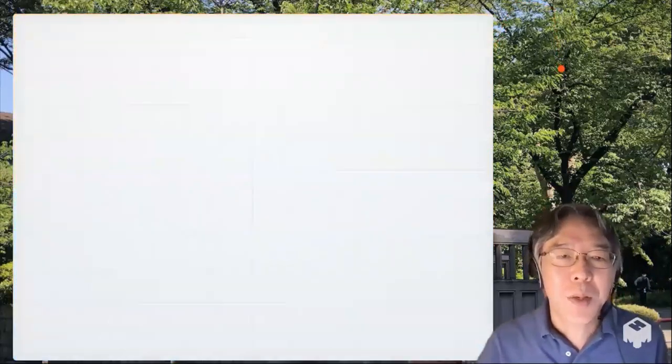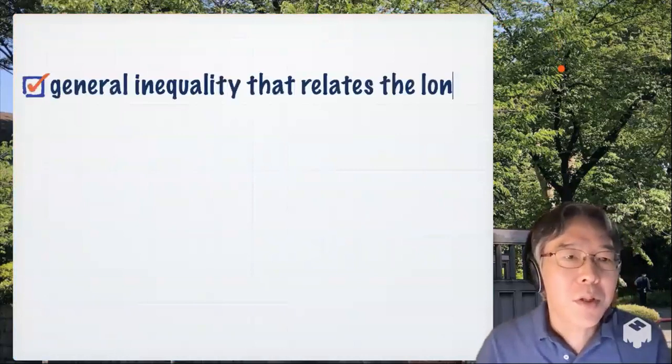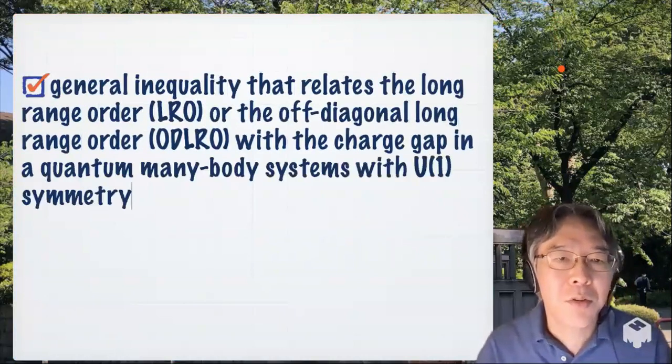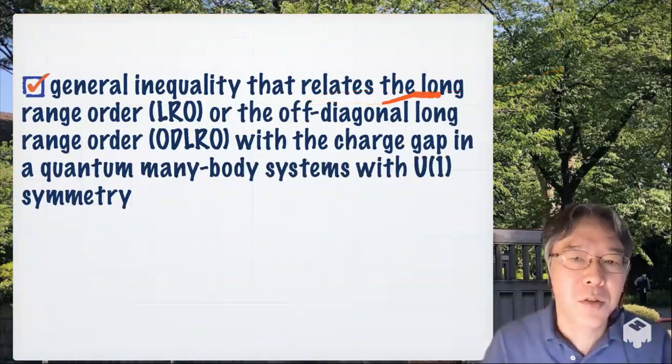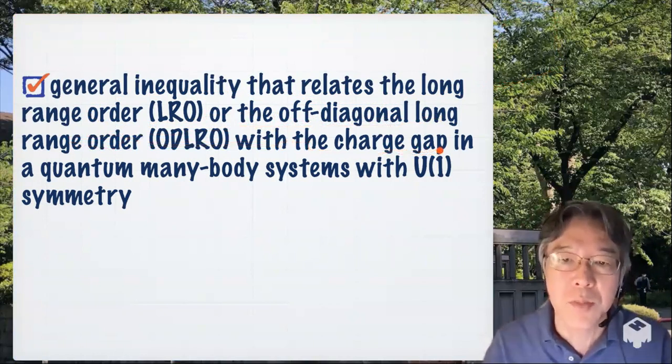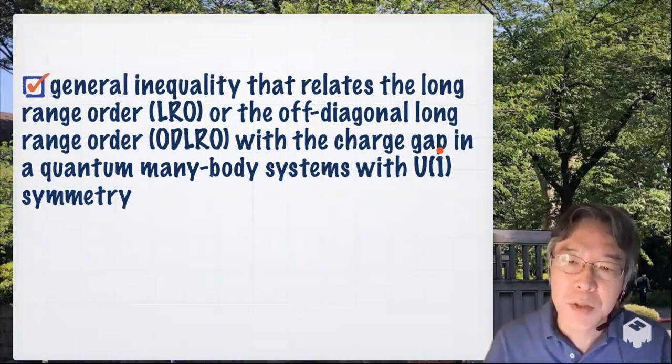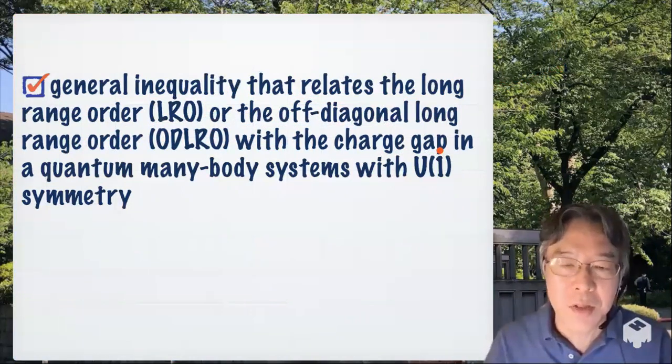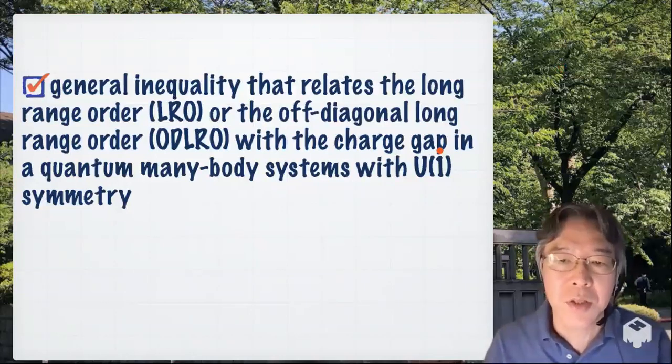So what is the paper all about? Well, here we prove a general inequality that relates the long-range order or the off-diagonal long-range order with the charge gap in a quantum many-body system with U(1) symmetry. And I would say that the inequality is rather fundamental and is also beautiful. So we were a bit surprised to find that nobody, at least nobody around us, has ever seen the inequality before.